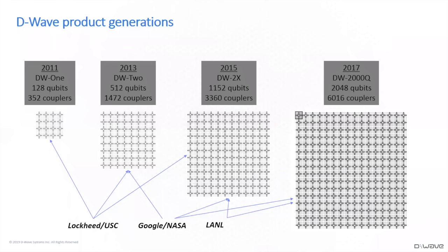Then two years later we introduced the D-Wave 2. Lockheed upgraded to that system. That system had 512 qubits and 1,400 couplers. Two years later we introduced the D-Wave 2X — 1,152 qubits, 3,300 couplers. Google had purchased the D-Wave 2 and upgraded to the 2X; Lockheed also upgraded to the 2X. Then in 2017 we introduced our fourth-generation product, the D-Wave 2000Q, with 2,048 qubits and 6,000 couplers. Each little gray ball in the pictures represents a qubit and the lines between them represent the couplers.